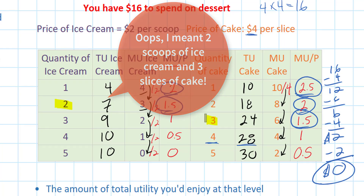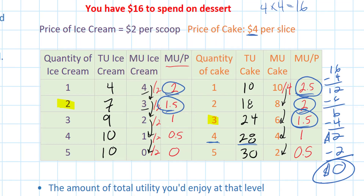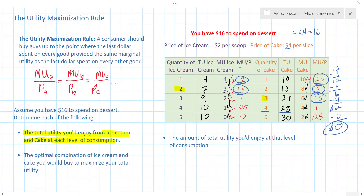To prove that, let's do a quick calculation — in fact, that's the last question here. What is the total amount of utility I'd enjoy at the level of consumption at which the marginal utility of ice cream divided by the price of ice cream equaled the marginal utility of cake divided by the price of cake?